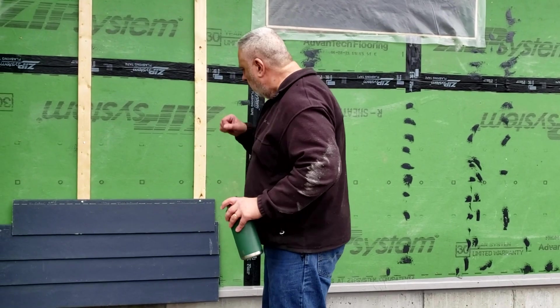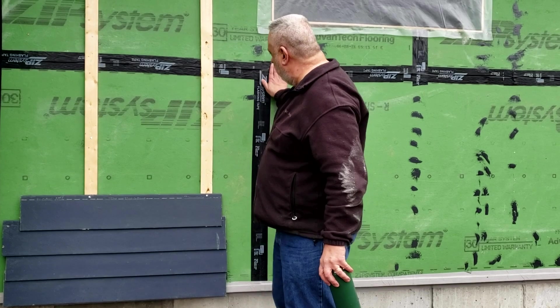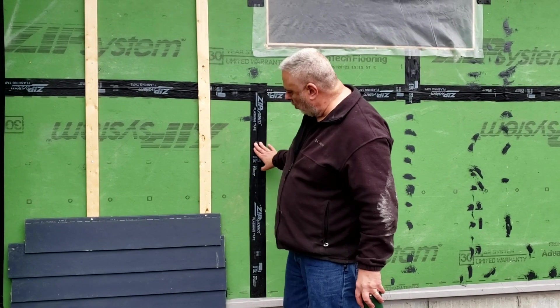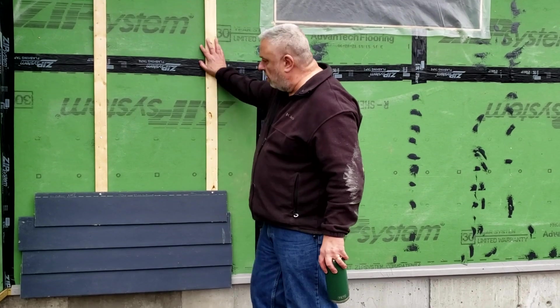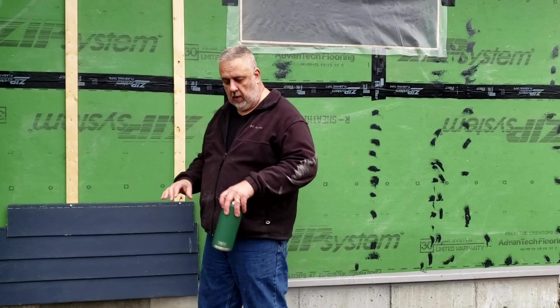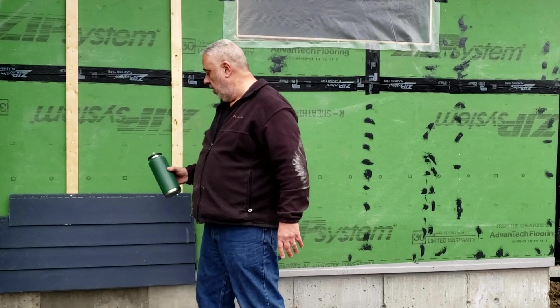Today we have a mock-up here. You can see we have our ZIP System. The ZIP System is taped in this case and the tape is rolled. Then we have furring strips. What the wood furring strips do is they pad out the wall. Why do you want the wall padded out?